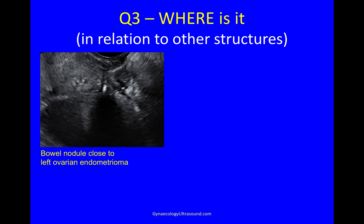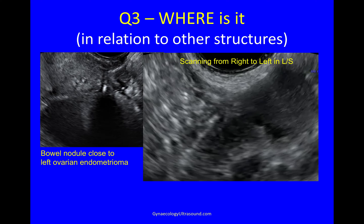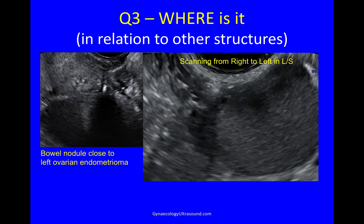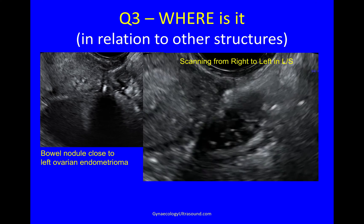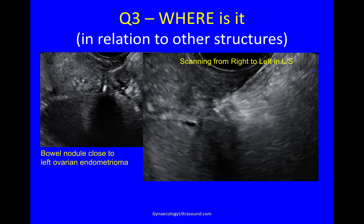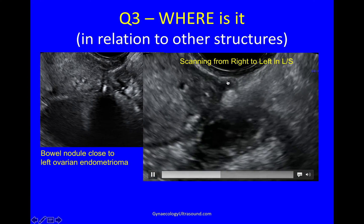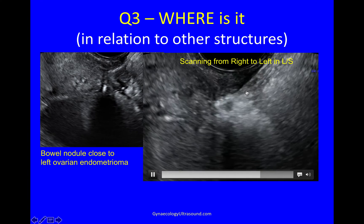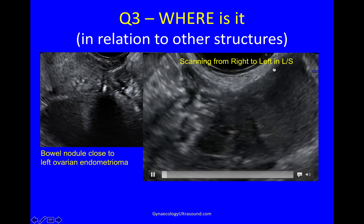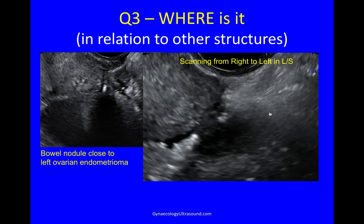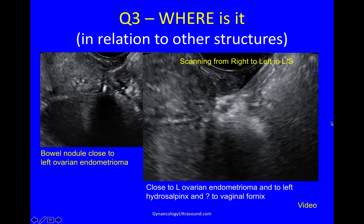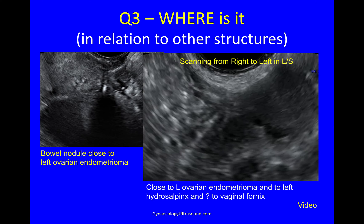Now, where is it in relation to the other structures? We've seen all sorts of things go on in this pelvis — how can we fit this puzzle together? We know this is the retroflexed uterus. There's that bowel nodule. We know it's close to the left ovarian endometrioma because it kept popping into our field of view. So if we do a video scanning from right to left in the longitudinal plane, there's the right ovarian endometrioma, the right hydrosalpinx, the uterus, the bowel nodule, and deep endometriosis in the ligaments. The bowel nodule is very close to the ovarian endometrioma and it looks close to the vaginal fornix.